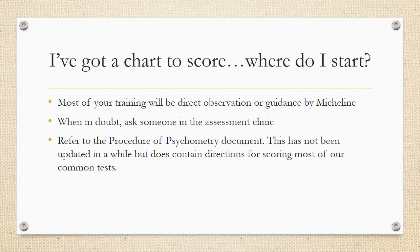Now you've got a chart to score. Where do you start? Most of your training will be direct observation or guidance by Michelin. But when in doubt, ask someone in the assessment clinic. There will always be people around. You can also refer to other places in the clinic, such as the procedure of psychometry document. Now, this has not been updated in a while, but it does contain directions for most of our tests and how to score them, or at least where to find the scoring application.